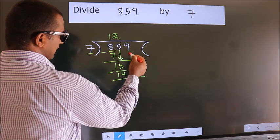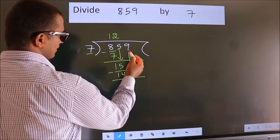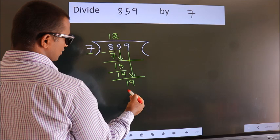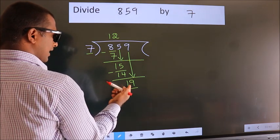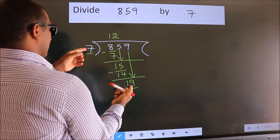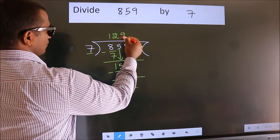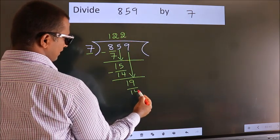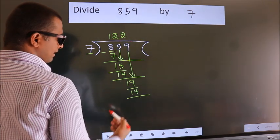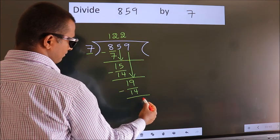After this bring down the beside number. So 9 down. So 19. A number close to 19 in 7 table is 7 twos 14. Now we subtract. We get 5.